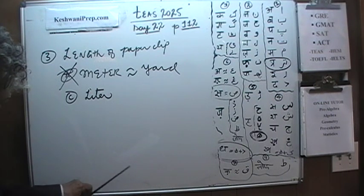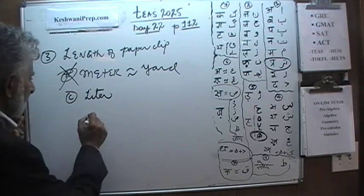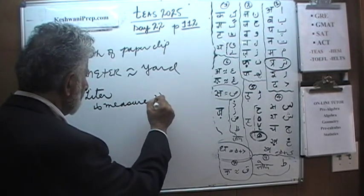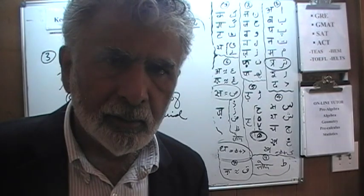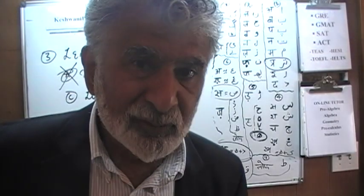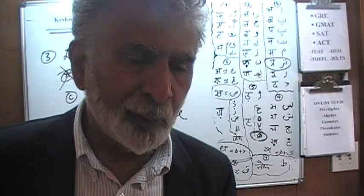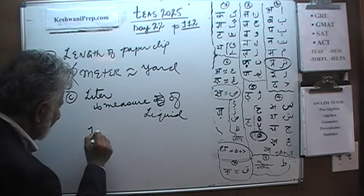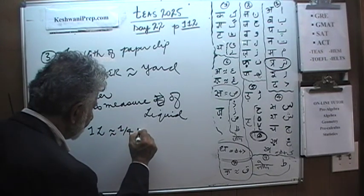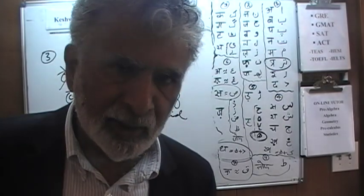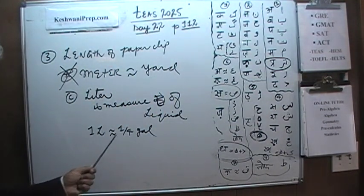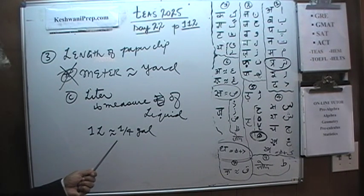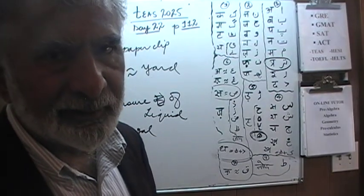Answer choice C says liter. What's wrong with liter? Liter is a measure of liquid — it's a unit used to measure the amount of liquid. Trying to measure the length of a paper clip in liters is just as insane as using gallons. One liter is about one quarter of a gallon. The point is: liter is used for liquid. We do not use liter to measure the length of something like a paper clip.